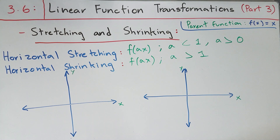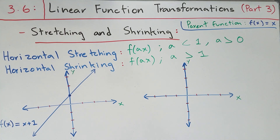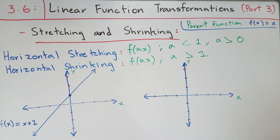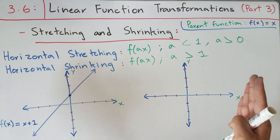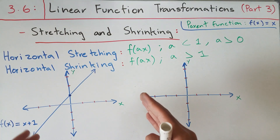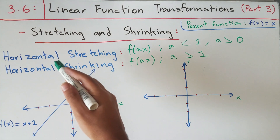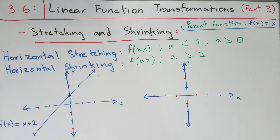Let's begin with horizontal stretching. On this coordinate plane, I've graphed the function f of x equals x plus one. We're going to perform a horizontal stretch by some factor a. From the definition, we know the slope is going to decrease because the line is being stretched horizontally. Let's say we want to do a horizontal stretch when a equals one half — one half is less than one, so it qualifies as a horizontal stretch. First, let's plot some values on f of x equals x plus one.